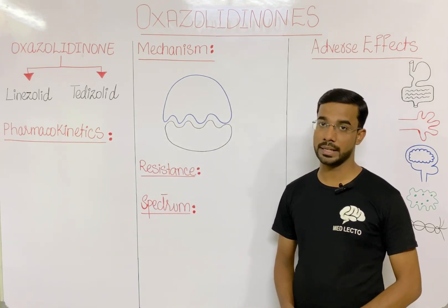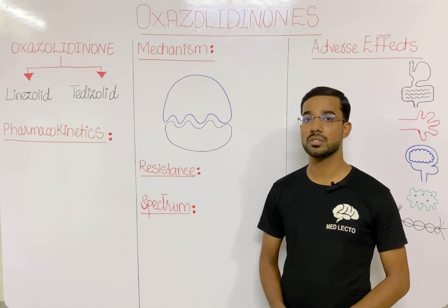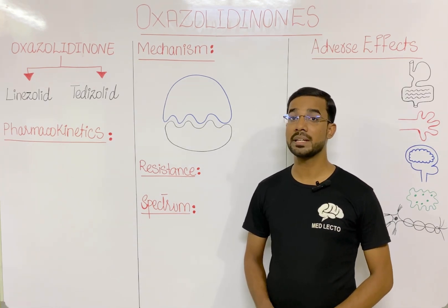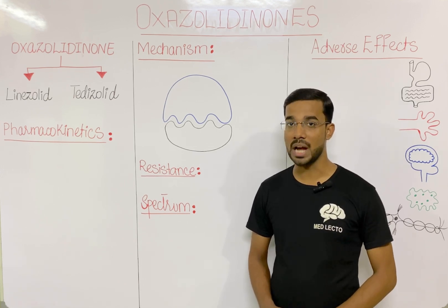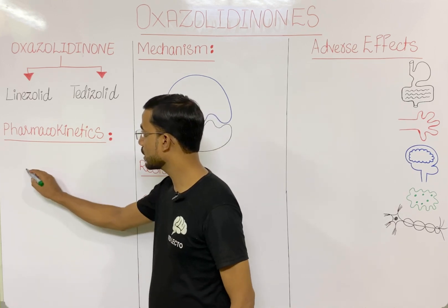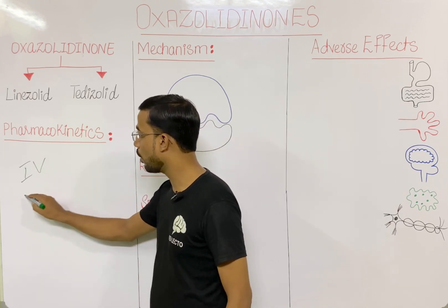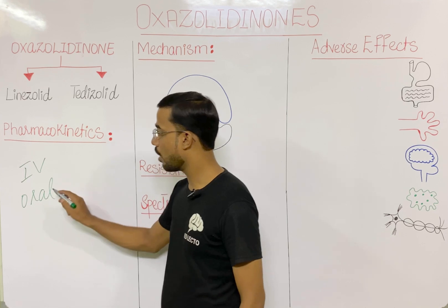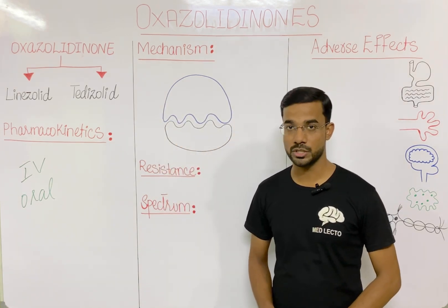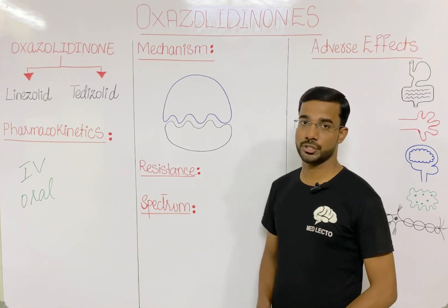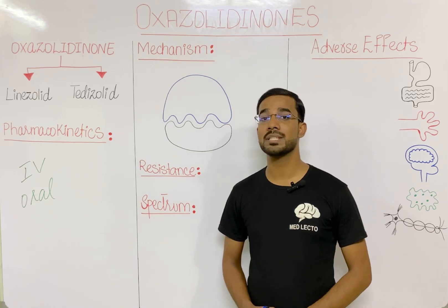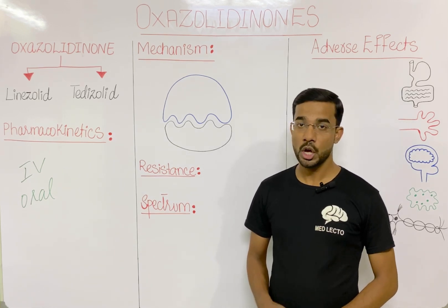First, we will look at the pharmacokinetics of the oxazolidinones. These antibiotics can be given through the oral route as well as through the IV route. Those are the two most important routes of drug administration.